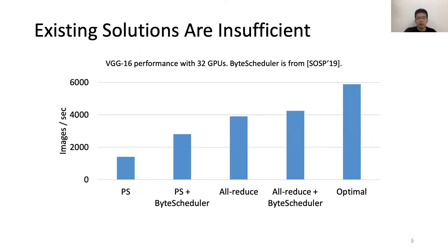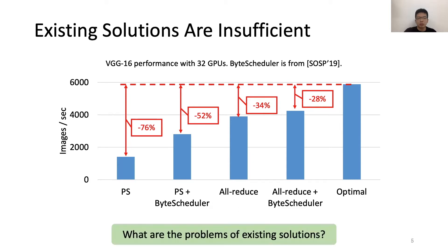Unfortunately, we find that existing solutions are insufficient. This figure shows the performance of state-of-the-art all-reduce and PS when training the VGG16 with 32 GPUs. We find that even with the optimizations from ByteScheduler, they are still far from optimal. So our question is, what are the problems of existing solutions?